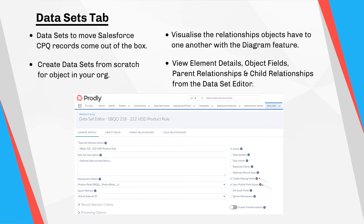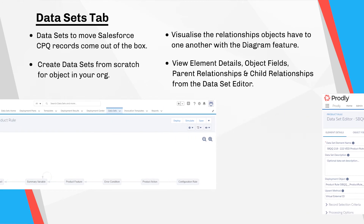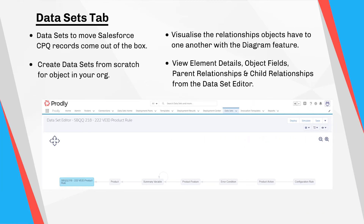In the dataset editor, you can view a number of things such as element details, object fields, parent relationships, and child relationships. You can also use the diagram feature to visualize the relationships objects have to one another. For example, in the Price Rule Van dataset, we can see the relationship between the price condition, price action, summary variables, and any lookup query associated with the price rule record. When creating custom datasets, you can also use the simulate functionality to reproduce what would happen if the dataset is deployed to your target environment, so you can check the dataset is complete and that it will deploy seamlessly.